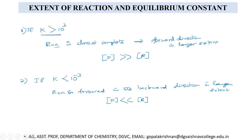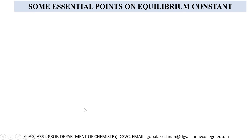If K is equal to 1 — which is a very rare case — it means the concentrations of the product and the reactant may be equal.